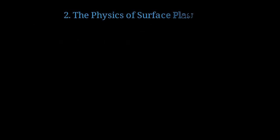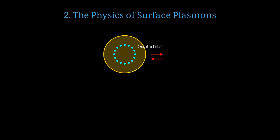Now let's dive into the physics behind surface plasmon resonance. When light hits a metallic nanoparticle, the oscillating electric field of the light wave causes the free electrons inside to oscillate collectively. This is the essence of a surface plasmon. The plasma frequency, omega plasma, equals the square root of nE squared divided by epsilon naught times electron mass. This fundamental equation describes the natural oscillation frequency of the electron gas.